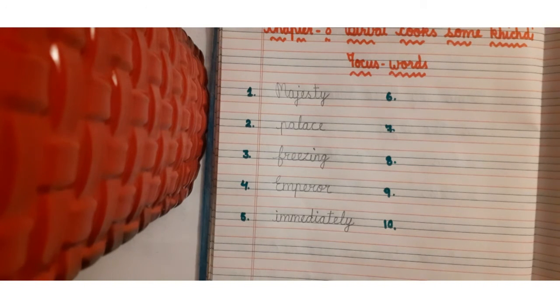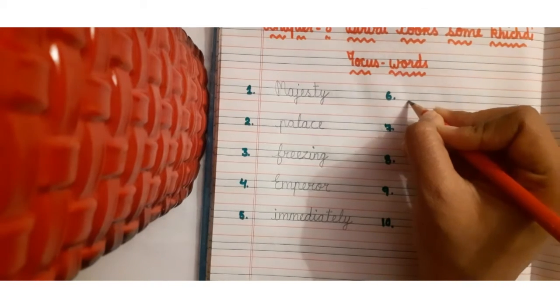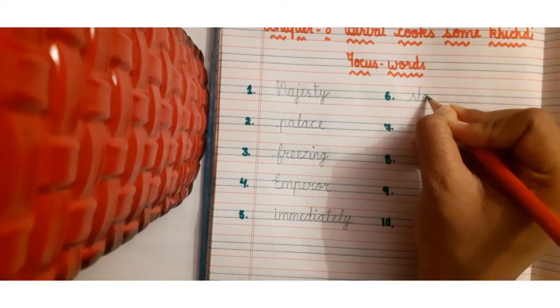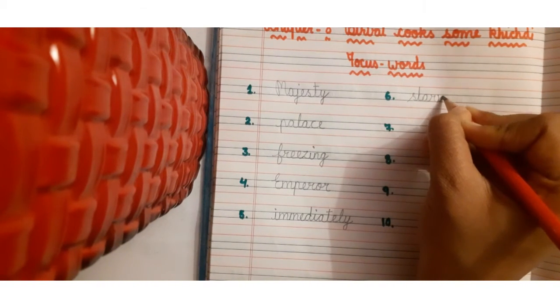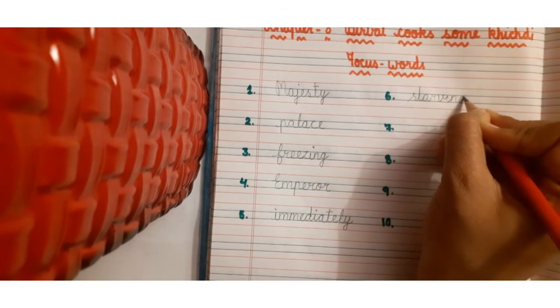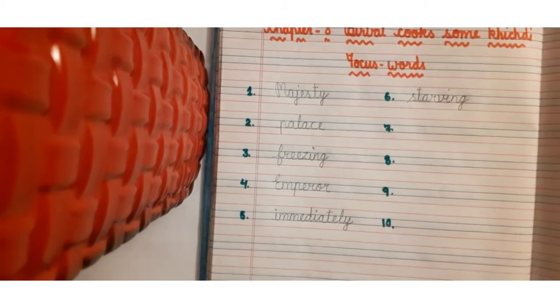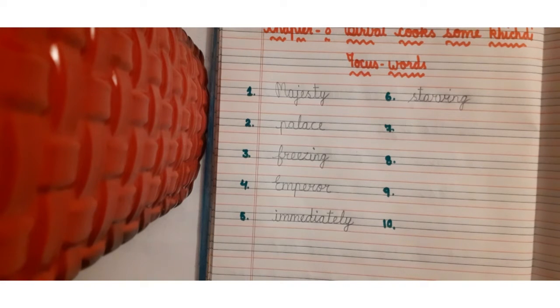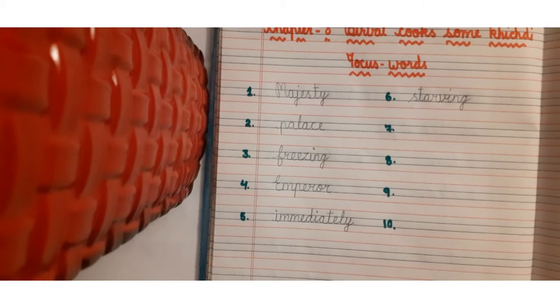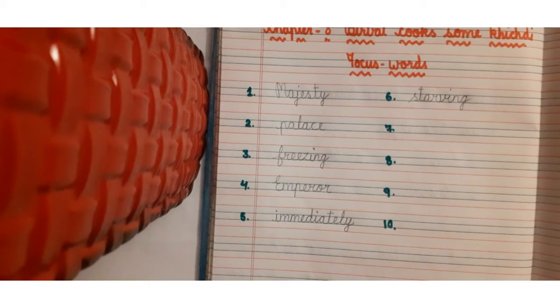Next word is starving. S-T-A-R-V-I-N-G, starving. Starving means jab kisi ko bohot zyada tez bhook lagti hai, tab kya bolta hai? I am starving. You can also say I am hungry, but agar aapki hunger bohot zyada badh jati hai, then you can say I am starving.